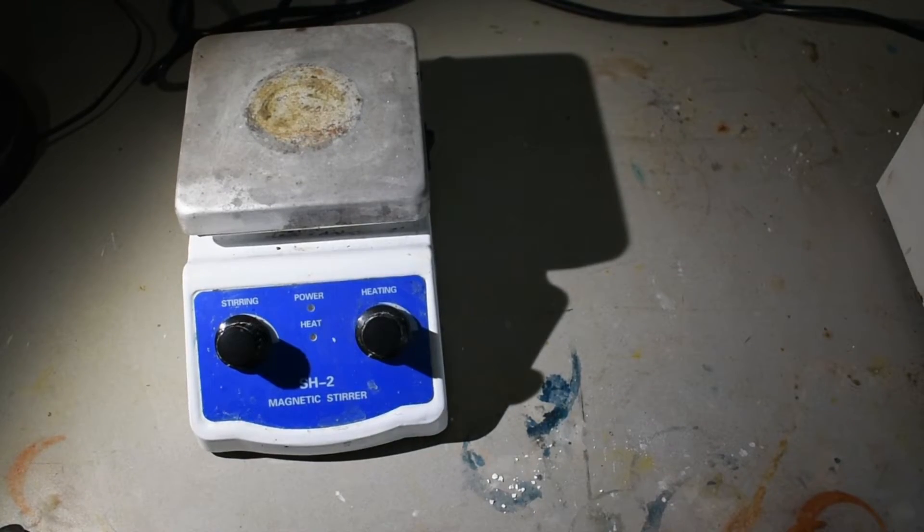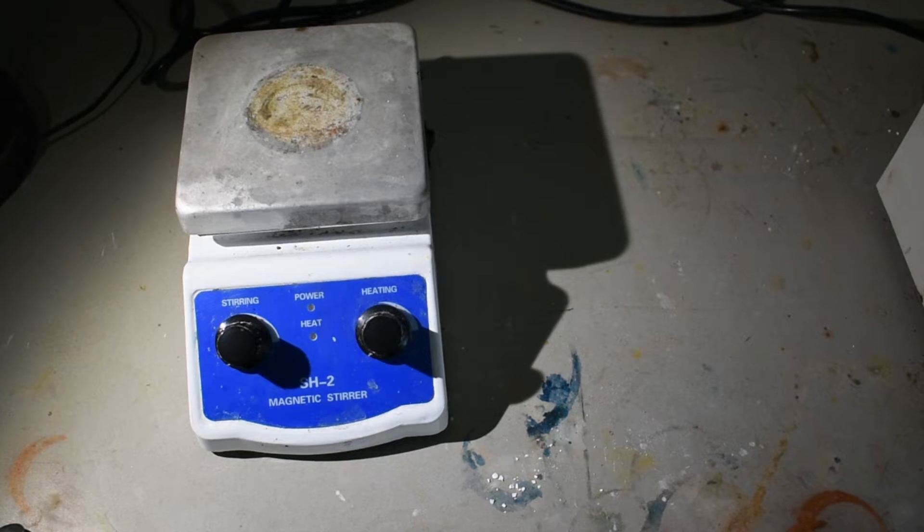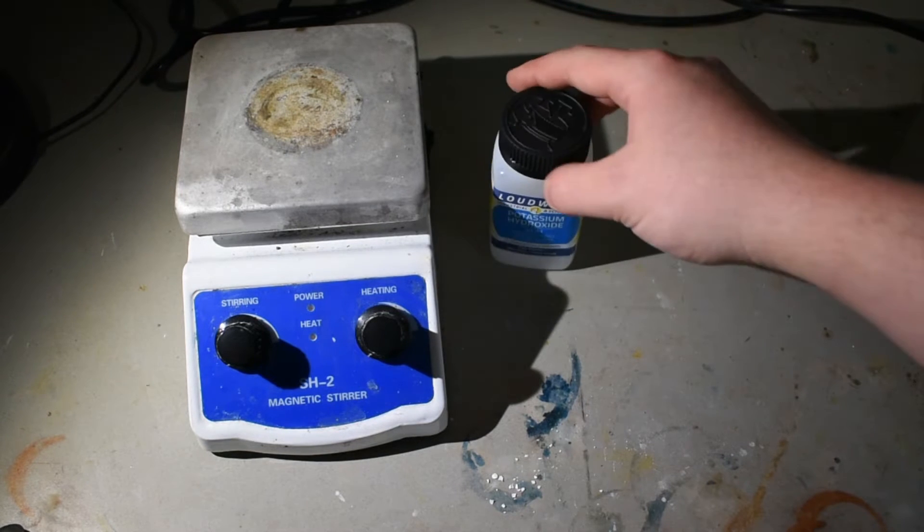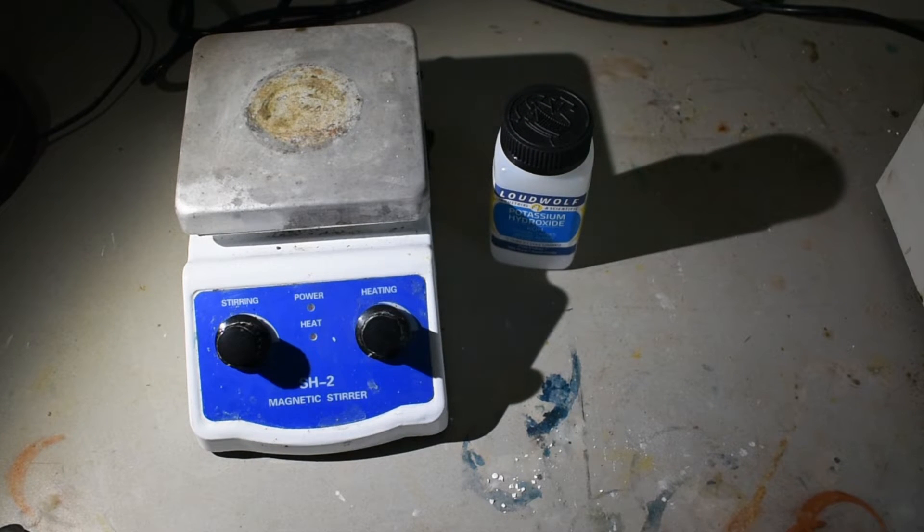Okay, another quick inorganic preparation. This time, barium peroxide. So what we're going to need is some potassium hydroxide, and we're also going to need a source of barium. In my case, barium nitrate.